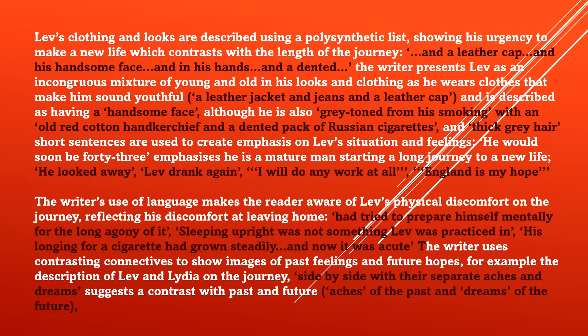Short sentences are used to create emphasis on Lev's situation and feelings. 'He would soon be 43' emphasizes that he is a mature man starting a long journey to a new life. 'He looked away' is another short sentence which suggests great length and detail about Lev's situation and feelings. Further short sentences include: 'Lev drank again,' 'I'll do any work at all,' and 'England is my hope' — all emphasizing key points.